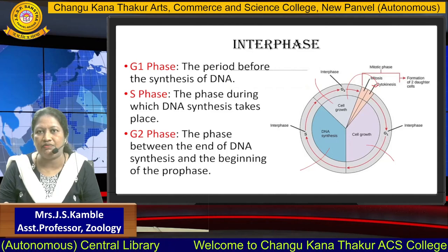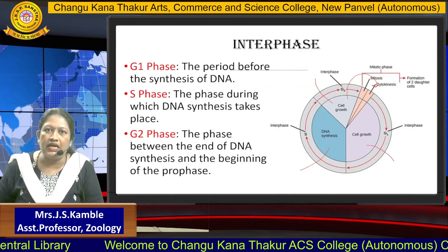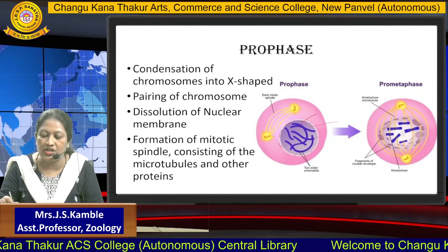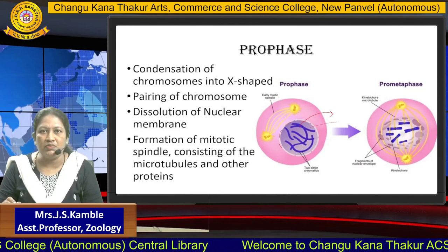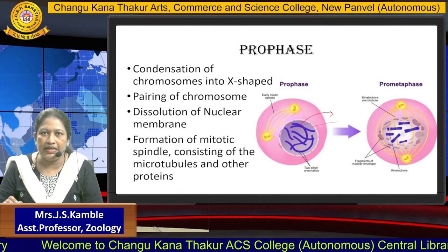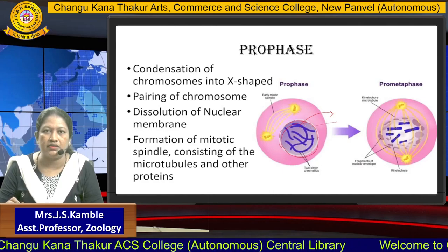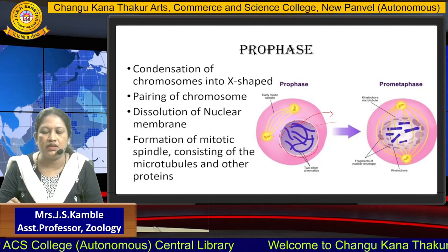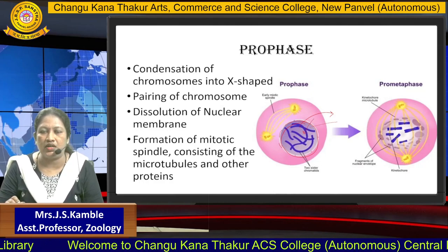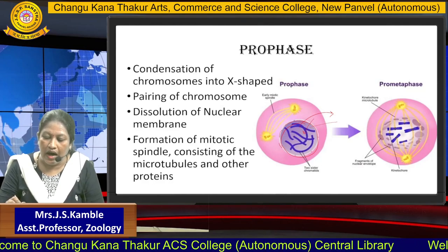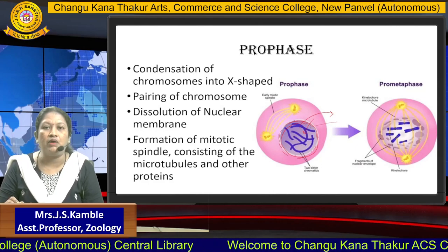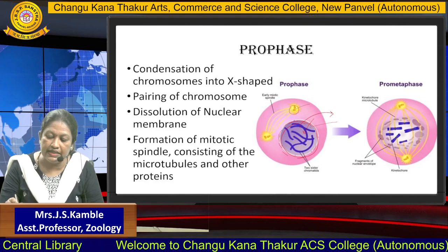In prophase, which is the first phase, the condensation of the chromosome into an X shape is carried out. Before prophase, chromosomes are in the form of a thread; they now get condensed and become short so they can fit into a small nucleus. Each chromosome, which is in a homologous pair, comes together and pairs with each other, and they are aligned according to their number. The nuclear membrane, which was intact, gets dissolved in this phase. Further, formation of the mitotic spindle and microtubules is simultaneously carried out in prophase.